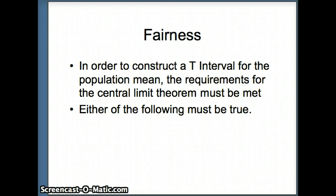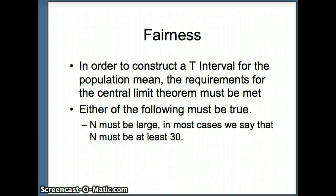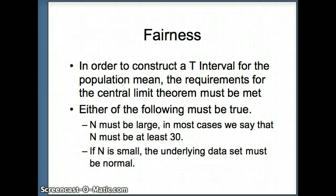So let's remind ourselves what those are. n must be large, so in most cases we say n has to be at least 30. And there's one other possibility, that is if n is small, the underlying data set itself must be normal.